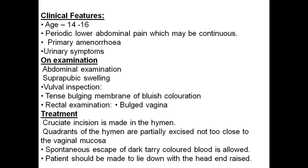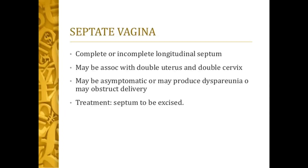Treatment: a cruciate incision is made in the hymen. Quadrants of the hymen are partially excised and sutured to the vaginal mucosa. Spontaneous escape of dark, tarry-colored blood is allowed. The patient should be positioned lying down with head and knees raised.